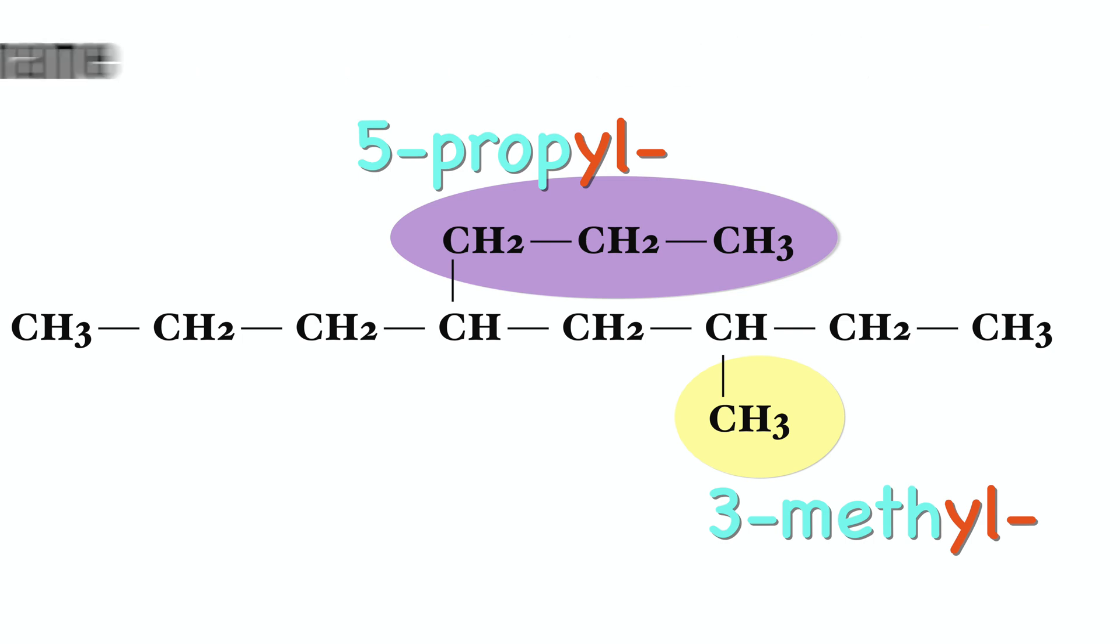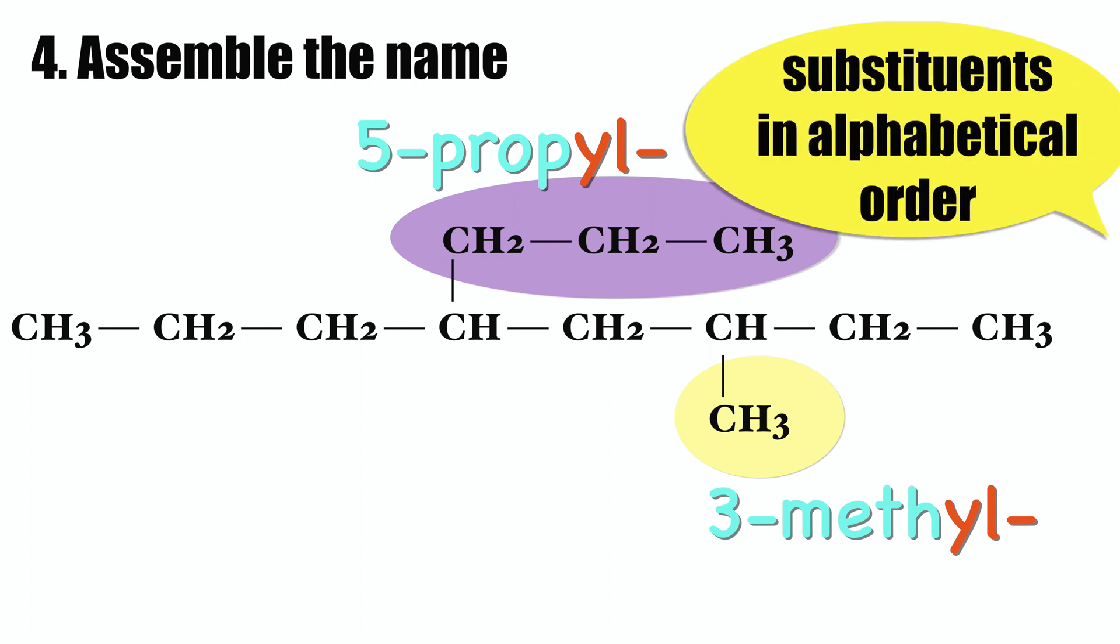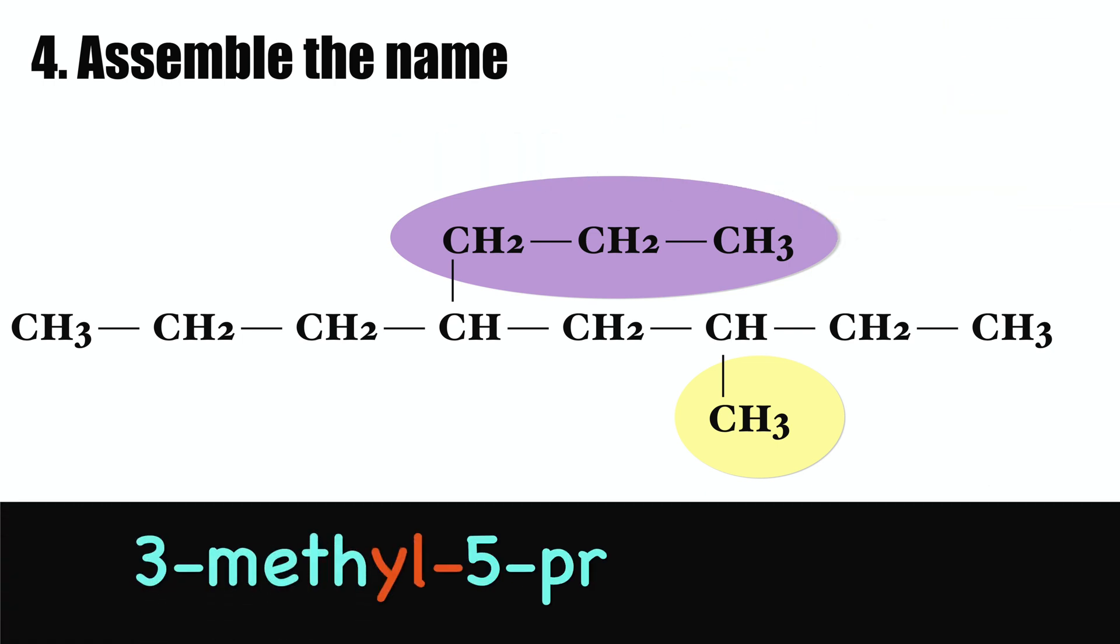Rule number four: assemble the name by listing substituents in alphabetical order using the base name. This particular compound is called 3-methyl-5-propyloctane.